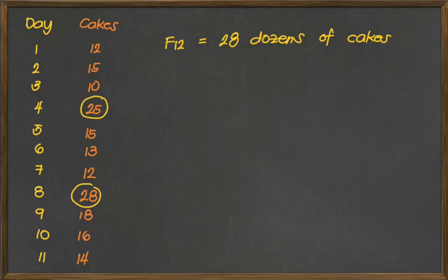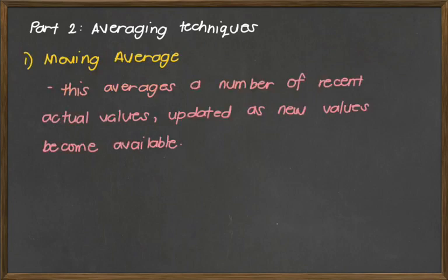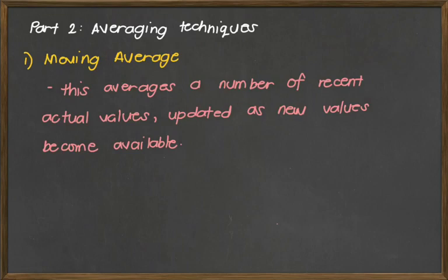Now we can move to the second part of our discussion. Part 2 is our averaging technique. We have three types for this approach. The first one is moving average — by definition, this averages a number of recent actual values updated as new values become available. Basically, we get the average of a given set of values depending on the number of periods to be included, whether a 5-period or 3-period moving average. When we use averaging techniques, we always make use of the most recent values.